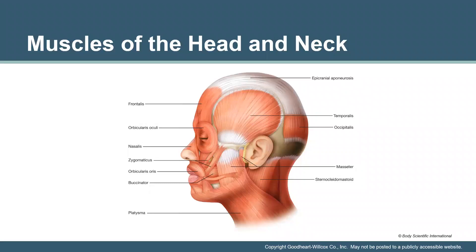The frontalis muscle covers the frontal bone of the skull. Notice that if we have a bone name, we'll likely have a similar muscular name, so one system supports understanding of the other. The frontalis attaches to the epicranial aponeurosis — that connective tissue sheet throughout our body — and to the skin above the eyebrows, enabling elevation of the eyebrows and wrinkling of the forehead. On the posterior side, the epicranial aponeurosis is attached to the temporal bone by the occipitalis muscle. Underneath is the occipital bone.